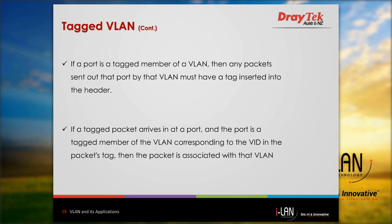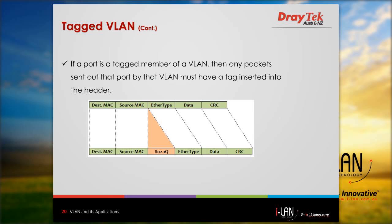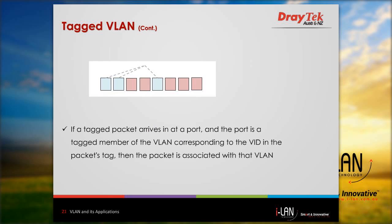Two facts about tagged VLAN. First, if a port is a tagged member of a VLAN, then any packets sent out to that port by that VLAN must have a tag inserted into the packet header. Second, if a tagged packet arrives at a port and the port is a tagged member of the VLAN corresponding to the VID in the packet's tag, then the packet is associated with that VLAN.